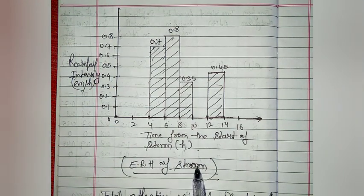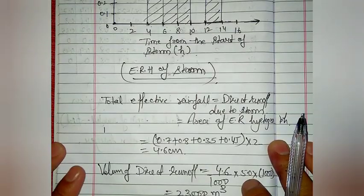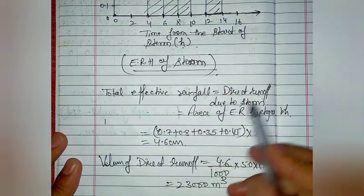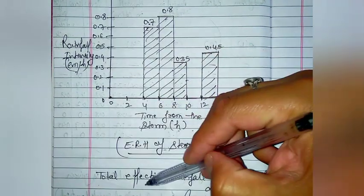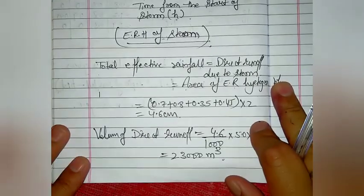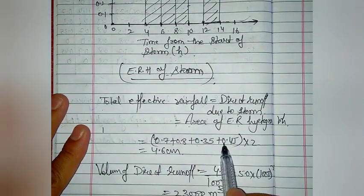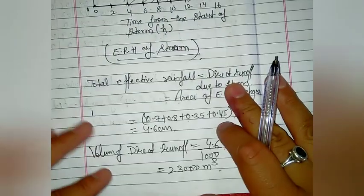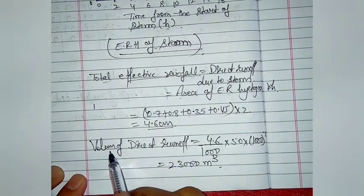The effective rainfall hyetograph excludes all losses. The total effective rainfall equals the direct runoff due to the storm, and is calculated as the area under the ERH curve. Adding the rectangular areas: (0.7 + 0.8 + 0.35 + 0.45) × 2 = 4.6 centimeters. So the total effective rainfall depth is 4.6 cm.